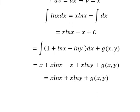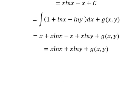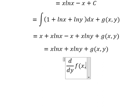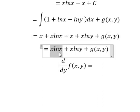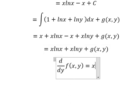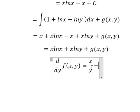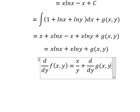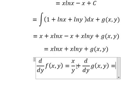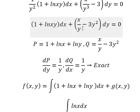Next, we take the partial derivative with respect to y on both sides. This term has no y, so we get zero. This term has ln(y), so we get x over y, times d over dy. And we know that this one is equal to this one.